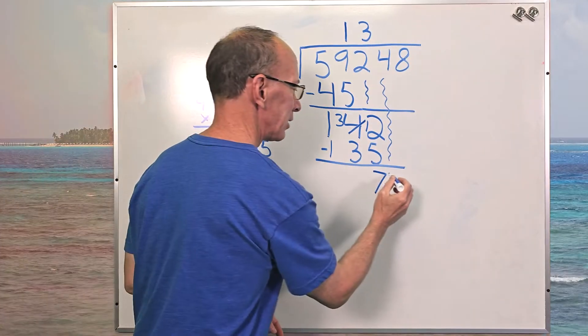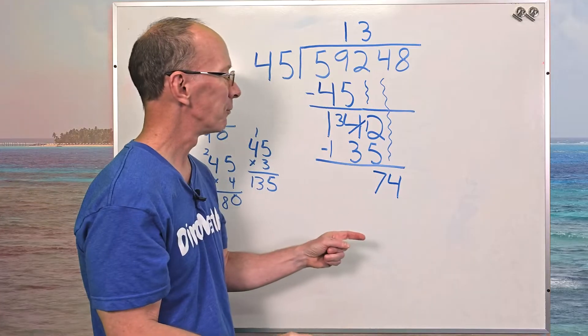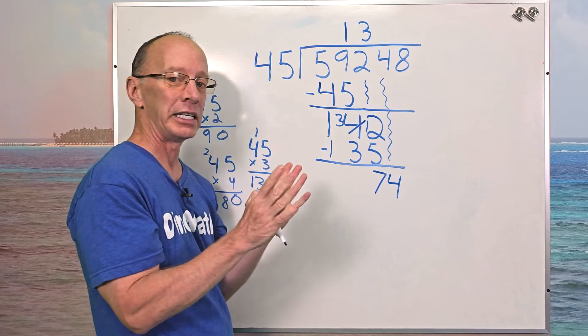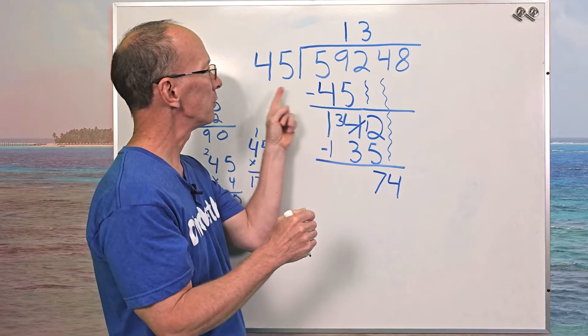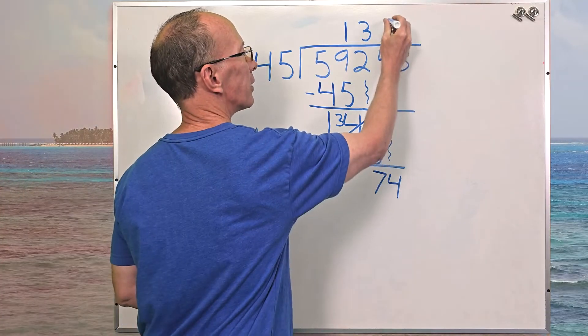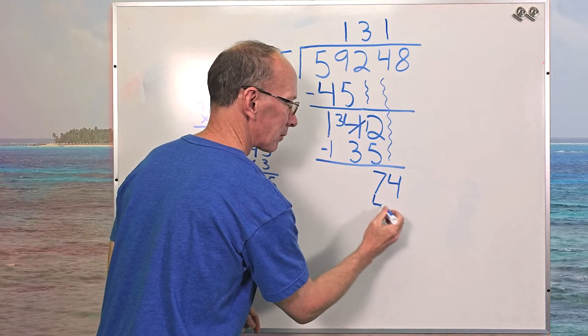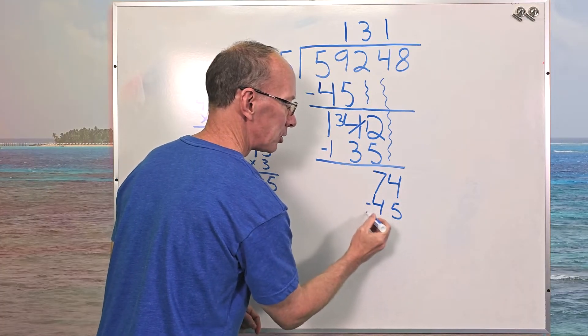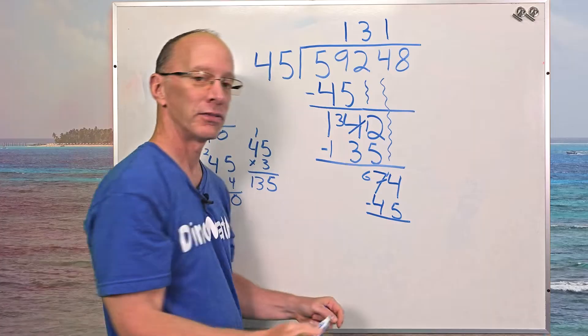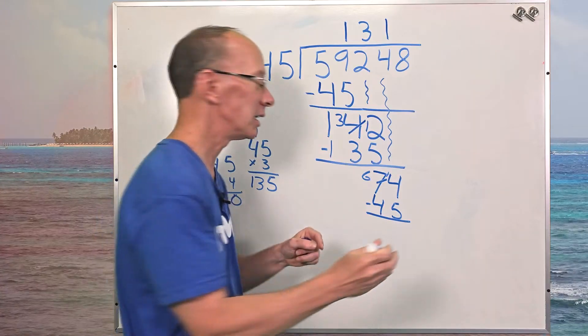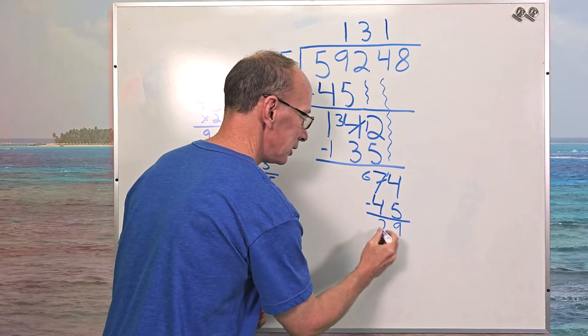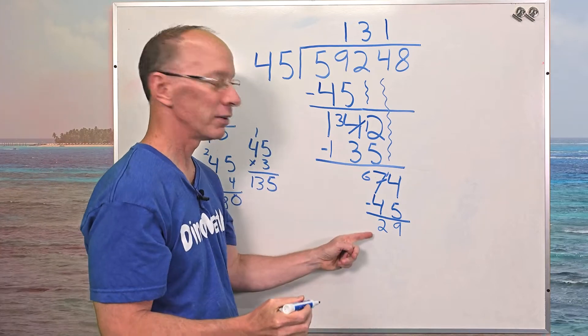So remember when I did 45 times 2 right here, that was 90. That's too big. So I can only put 45 into 74 one time. I'm going to put the 1 right here. One times 45 is 45, subtract. And now I have to borrow here. So this turns into a 6, that is 14. 14 minus 5, 9. And then 6 minus 4, 2.